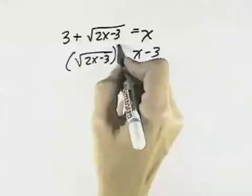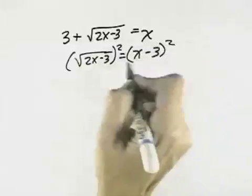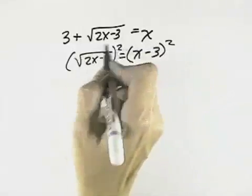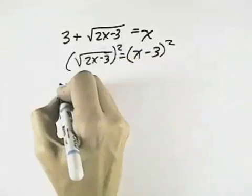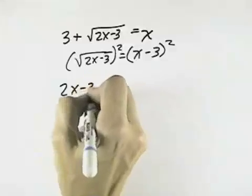That allows us now to square both sides of the equation, which allows the square root and square power to cancel each other out to eliminate our radical. So that on the left, we just have 2x minus 3.